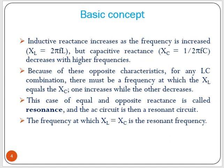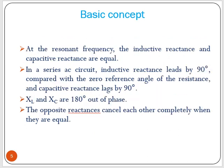Because of these opposite characteristics, for any LC combination there must be a frequency at which XC and XL are equal — one increases while the other decreases. This case of equal and opposite reactances is called resonance, and the AC circuit is then a resonant circuit. The frequency at which XL equals XC is called the resonant frequency. At this resonant frequency, inductive and capacitive reactances are equal.